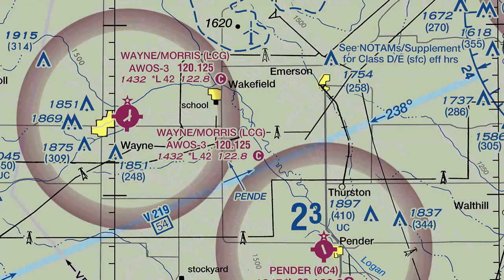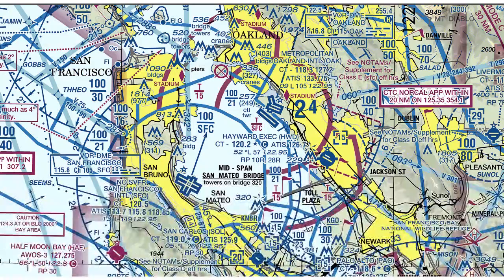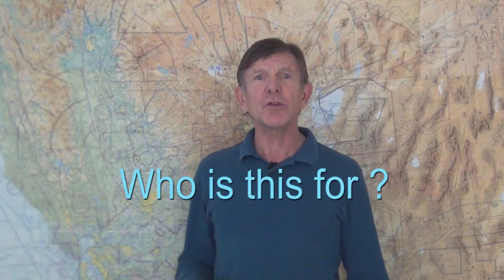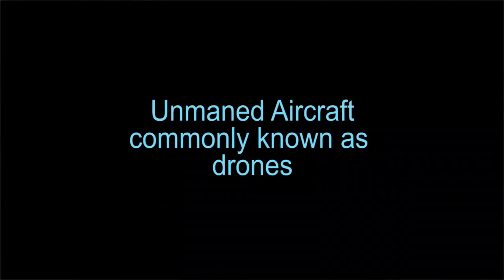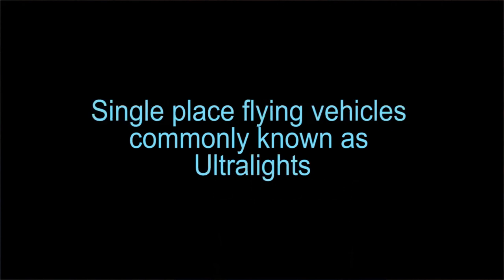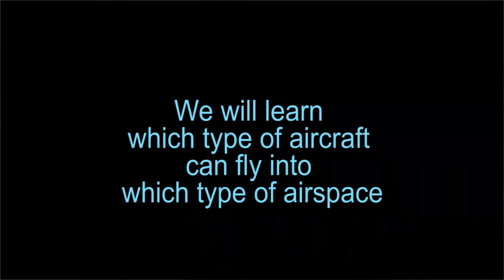We are going to start with the simplest airspace and work up to the most complex. Who is this for? Small unmanned aircraft systems commonly known as drones, single place flying vehicles commonly known as ultralights, sport pilots flying light sport aircraft, and private instrument and commercial pilots flying everything else. This is helpful overall to understand the different airspace types and know what type of aircraft fly into which type of airspace.